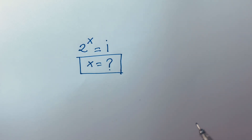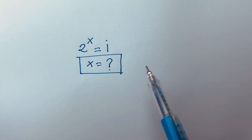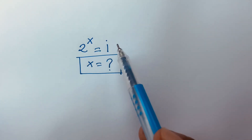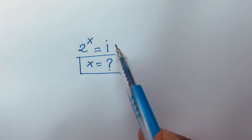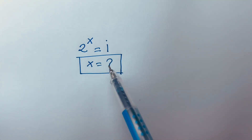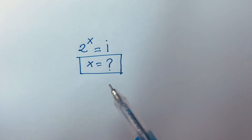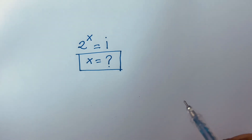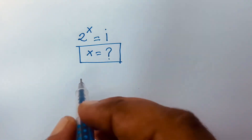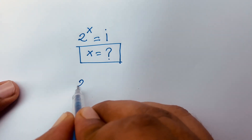In this video we solve an interesting math problem: 2 to the power x is equal to i. We'll find out the value of x in this exponential equation. First of all, our question is 2 to the power x is equal to i.